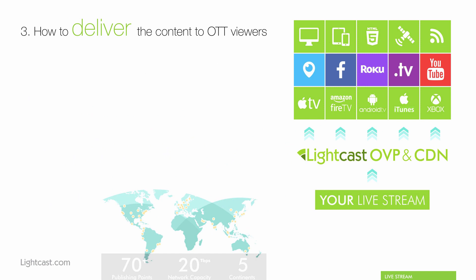Now that we've uploaded, transcoded, and managed all our video archives, audio archives, linear streams, and live events — and added all the metadata, images, and publishing settings to all your apps, connected websites, mobile apps, and TV apps — we now need to deliver that content to the viewers, your OTT viewers, on their devices, at their location, wherever they are in the world. For that purpose, we need to use a robust CDN.